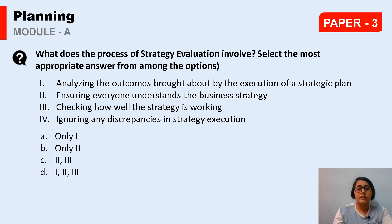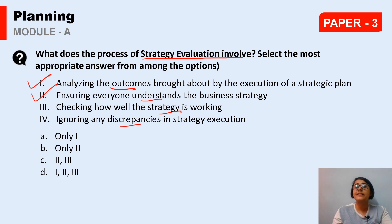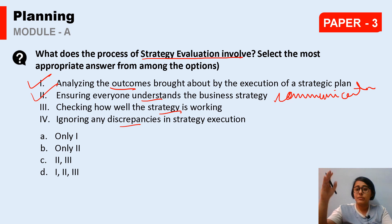The next question: What does the process of strategy evaluation involve? It is a technique used for internal evaluation. The statements include: 1) Analyzing the outcomes brought about by the execution of a strategic plan, 2) Ensuring everyone understands the business strategy — because unless every employee understands the strategy, it cannot be implemented, 3) Checking how well the strategy is working, 4) Ignoring discrepancies in strategy execution. Ignoring discrepancies is incorrect. The right answer covers statements 1, 2, and 3.